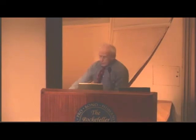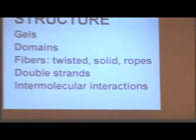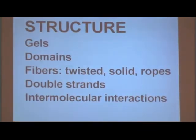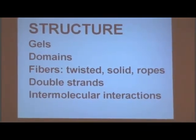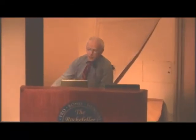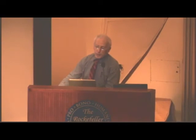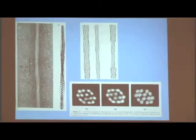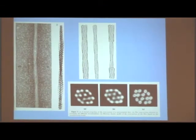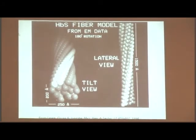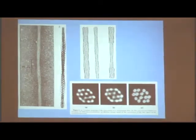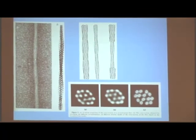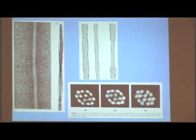The first aspect I'm going to talk about is structure — the structure of the gel, the domains that arise from nucleation, the fibers themselves, and the interactions involved. This is an electron micrograph from the literature of a sickle cell fiber. You can see it's twisted — it's narrow here, and wider over here. The dimensions are known; the pitch, meaning the distance from one narrow region to the next, is about 270 nanometers.